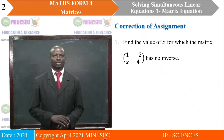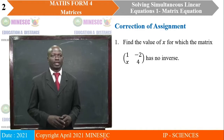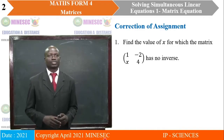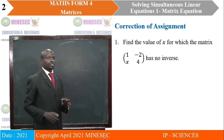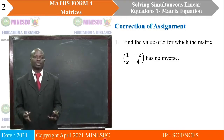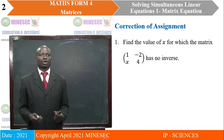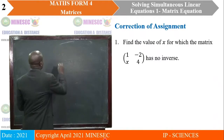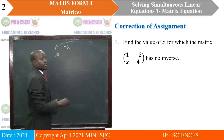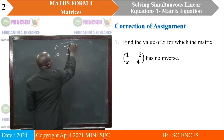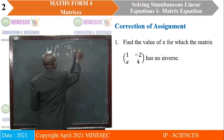The first question is for us to find the value of x for which the matrix [1, -2; x, 4] has no inverse. Now, for a matrix not to have an inverse, it means the determinant of that matrix is zero. So this matrix [1, -2; x, 4] having no inverse means that the determinant of that matrix is equal to zero.